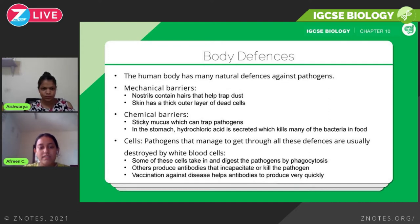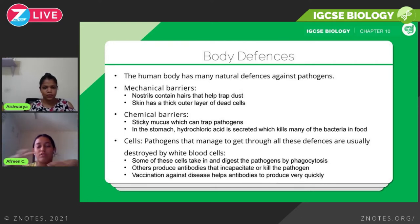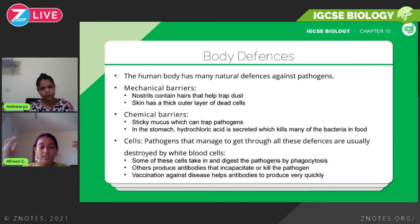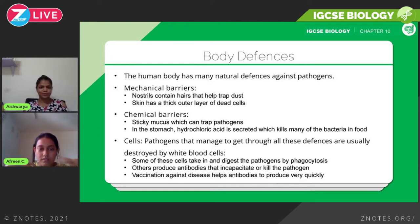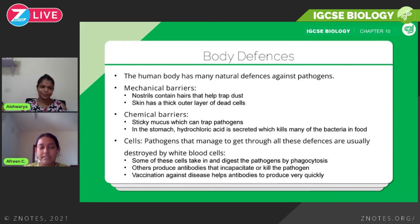The second type of white blood cells produce antibodies that disable or kill the pathogen — either weakening it so it can't cause harm, or destroying it entirely. These are all natural defenses created by your own body. However, we also have external defenses we can deploy, the most effective being vaccination, which helps produce antibodies very quickly.